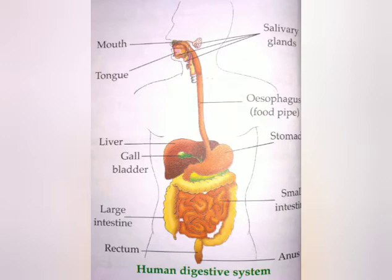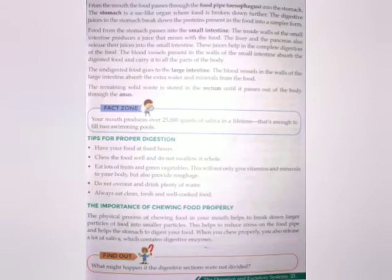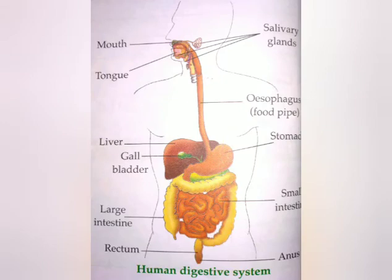After that, from the stomach the food passes into the small intestine. Again in the small intestine, some digestive juices mix with the food. The liver and the pancreas also release their juices into the small intestine so that the food gets digested completely. There are blood vessels in the walls of the small intestine that absorb the digested food and carry it to all parts of the body.